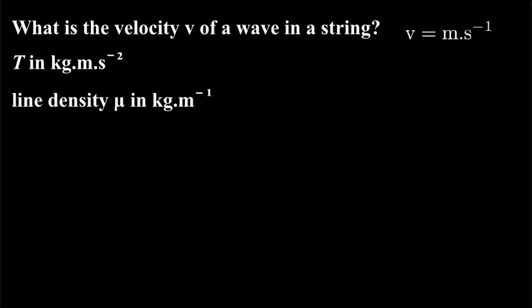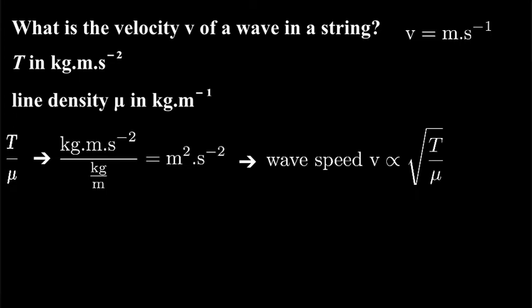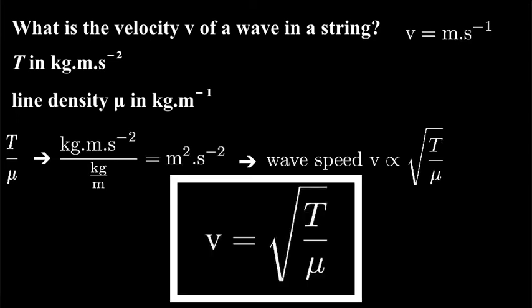So, we've got to combine tension, kilogram meters per second per second, with line density, kilograms per meter. The wave speed is going to be in meters per second, so obviously the kilograms must cancel. Let's try tension over mass per unit length. That gives us kilogram meters per second per second over kilograms per meter. That gives us meters squared per second squared. Okay, remember our wave speed is going to be meters per second, so that suggests that the wave speed V is proportional to the square root of the tension divided by the mass per unit length. Well, if we do the mathematics, it turns out that the constant proportionality here is one. The wave speed is just equal to the square root of the ratio of tension to the mass per unit length. That means that it takes four times as much tension to double the speed.